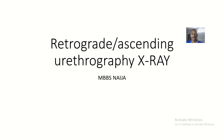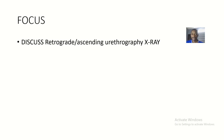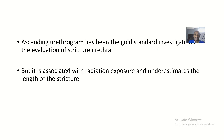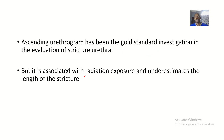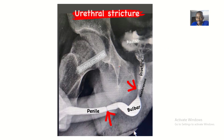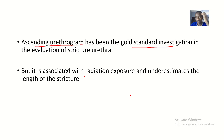Today I'll be talking about retrograde or ascending urethrography X-ray. Ascending urethrogram has been the gold standard investigation in evaluation of ureteral stricture. So if you have a ureter that is constricted at a portion, you use the ascending urethrogram method of X-ray to see if there's a stricture in the ureter or not.